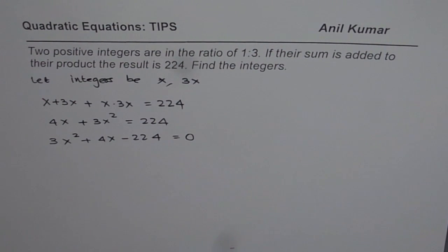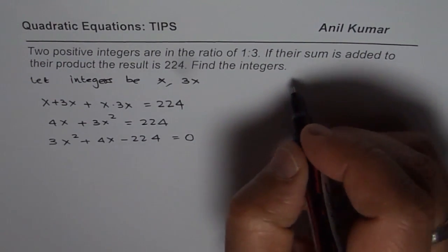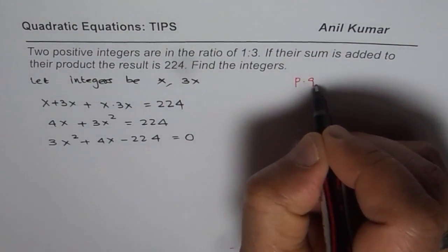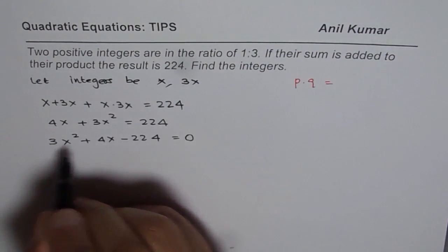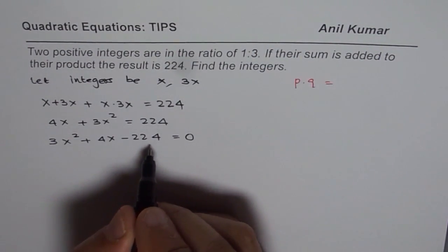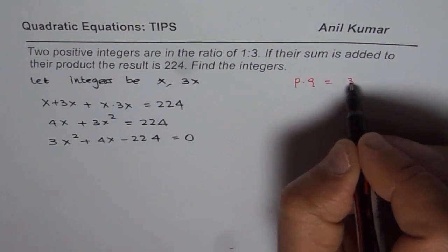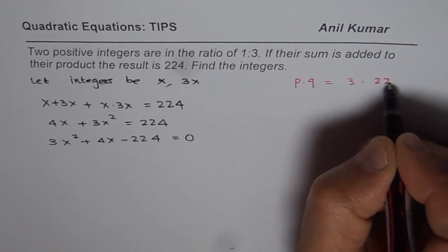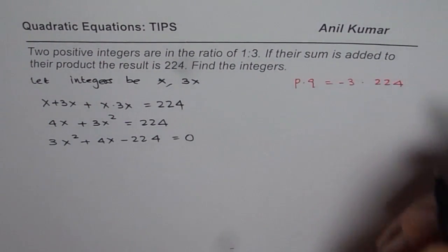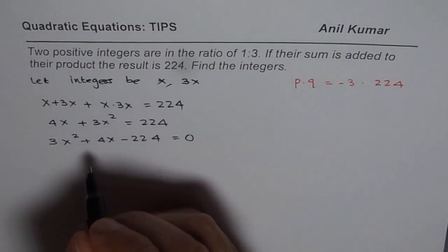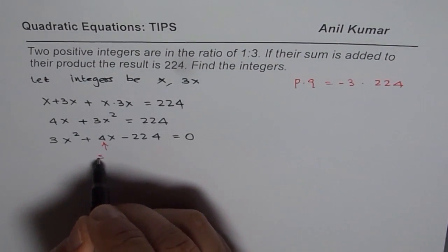You can always use quadratic formula to solve it. You could factor and solve it. So we will use factoring techniques to solve this. What are we looking for? We are looking for a product of two numbers. It should be 3 times minus 224. That is the product. 3 times 224 negative is what we want, and the sum should be 4. That is the sum we are looking for.